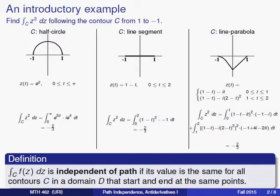Alright, so we would say that this integral, the integral of z squared from one to minus one, is independent of path, because it seems, at least from these examples we've done, that the contour doesn't matter. You get the value of negative two-thirds in each case.